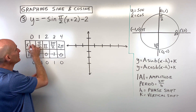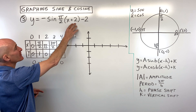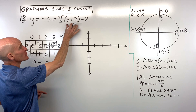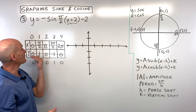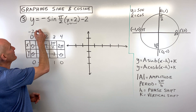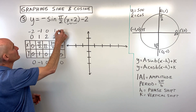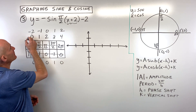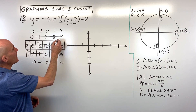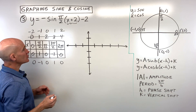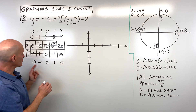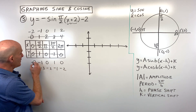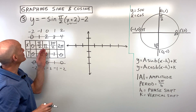Now let's look at the shift. The phase shift is plus two grouped with x — opposite effect, so plus two goes left two. We subtract two from all x-values: 0-2 = -2, 1-2 = -1, 2-2 = 0, 3-2 = 1, 4-2 = 2. The k value is negative two — that shifts the graph down two — so we subtract two from all y-values.